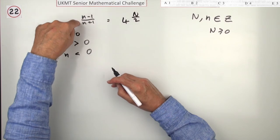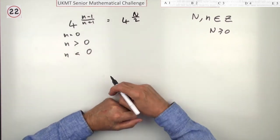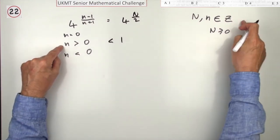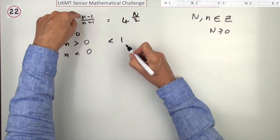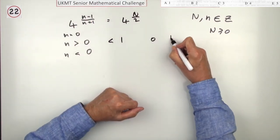Now, if n is greater than 0, this expression has got a limit. This expression, because the numerator is smaller, has to be less than 1, which means if n is a positive integer, then the only two values you could get for this that would work would be 0 and a half.